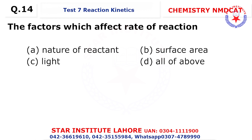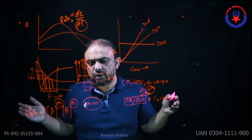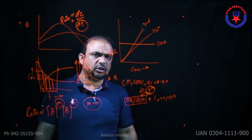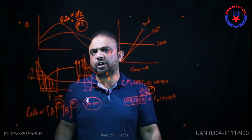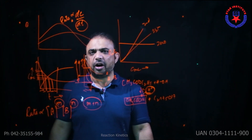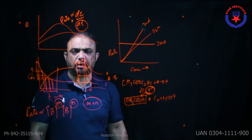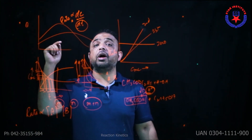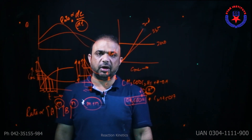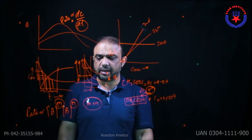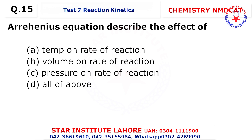Question 14: The factors which affect the rate of a reaction — greater surface area means greater reaction rate. Photolytic reactions require light. Ionic species have a faster reaction rate, polar equivalents have moderate reaction rate, and non-polar equivalents possess slower reaction rate. So all of these — choice D.